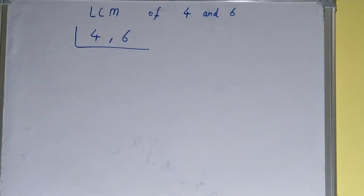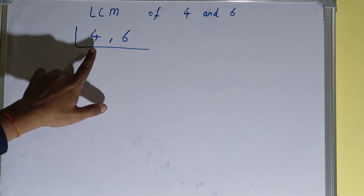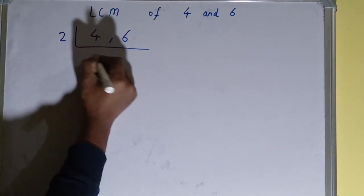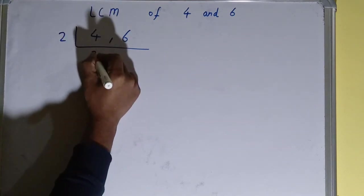And what you need to do is start with the lowest prime number you have, that is 2. Check if any of the numbers is divisible or not. So this one is divisible by 2 and this one is also divisible by 2, so divide it. On dividing, what we'll get? We'll get 2 over here.